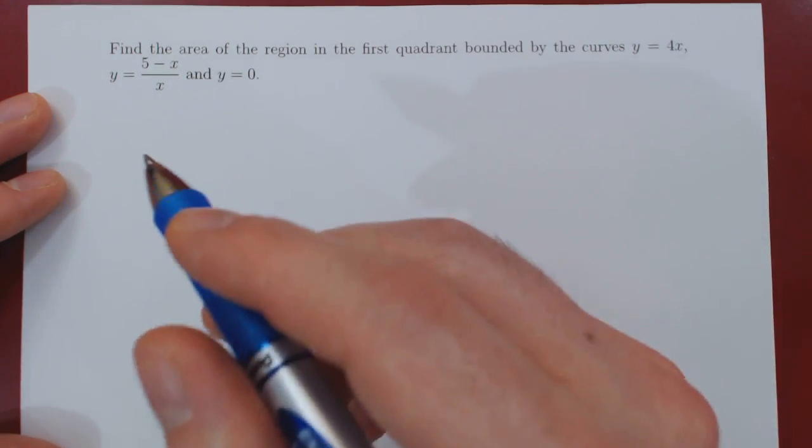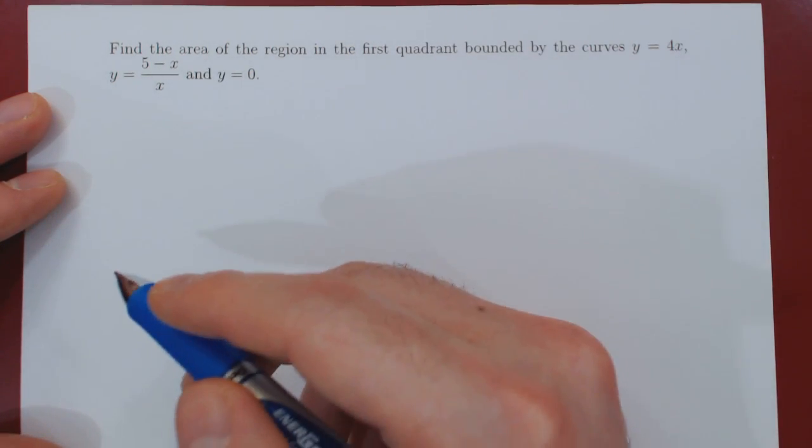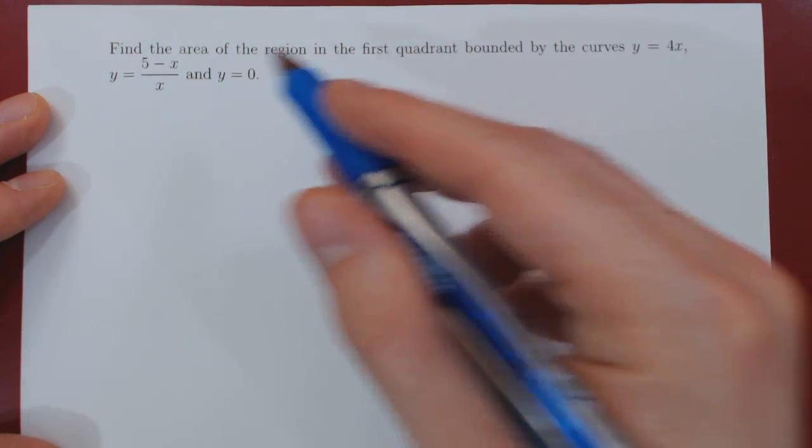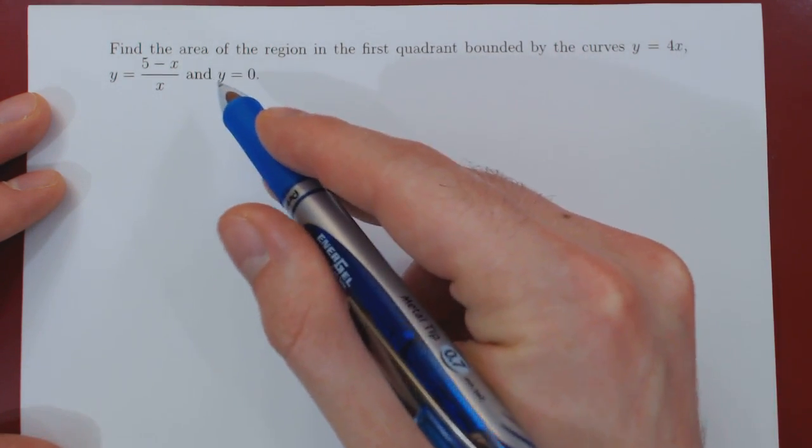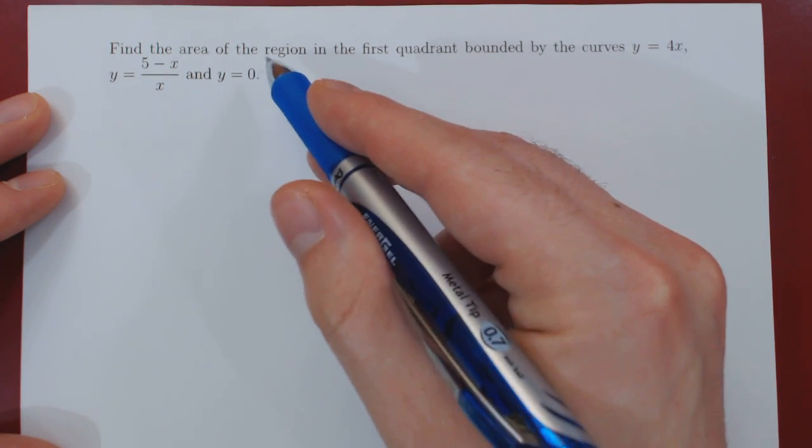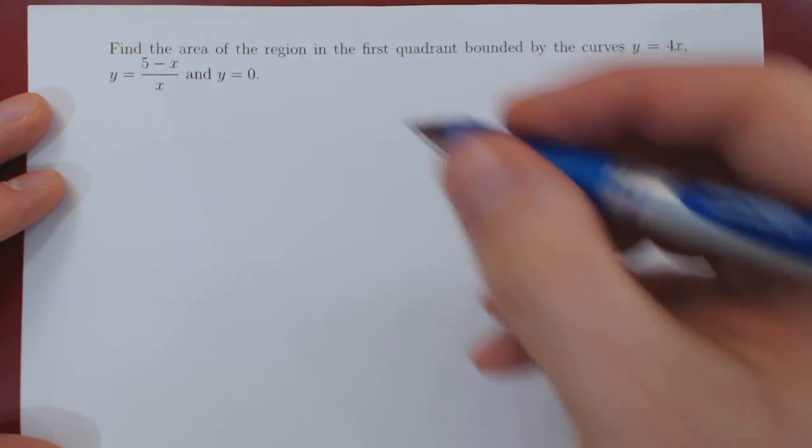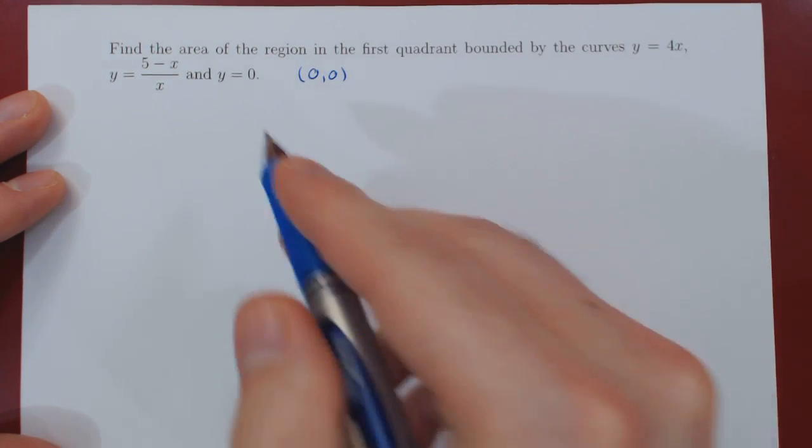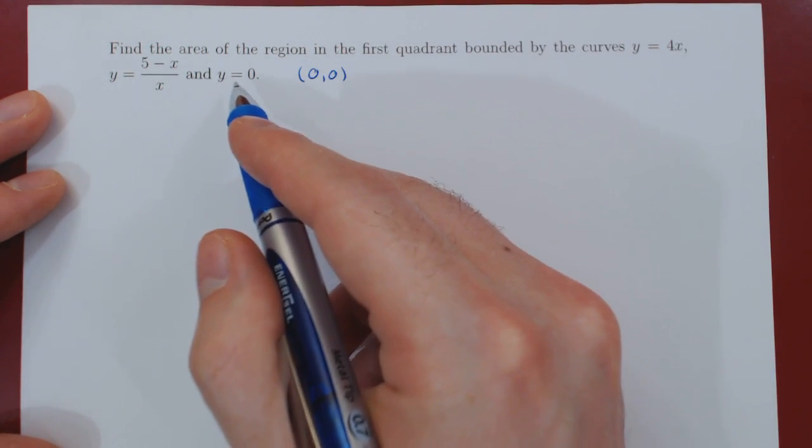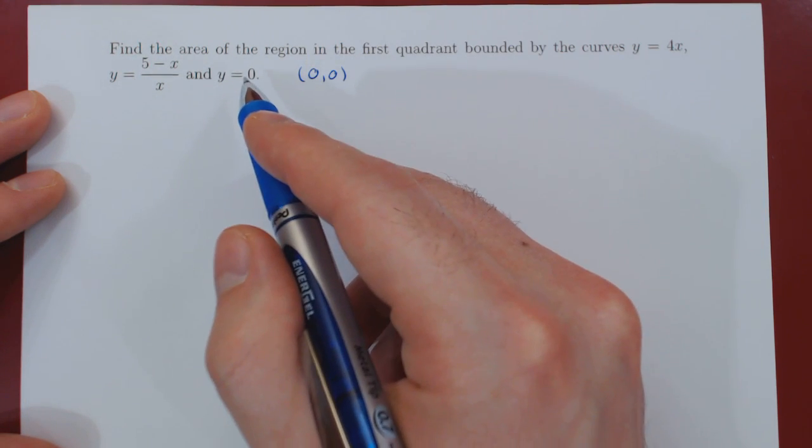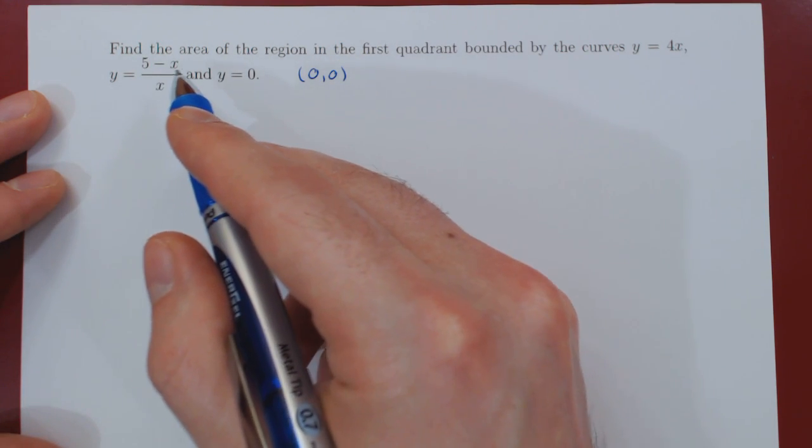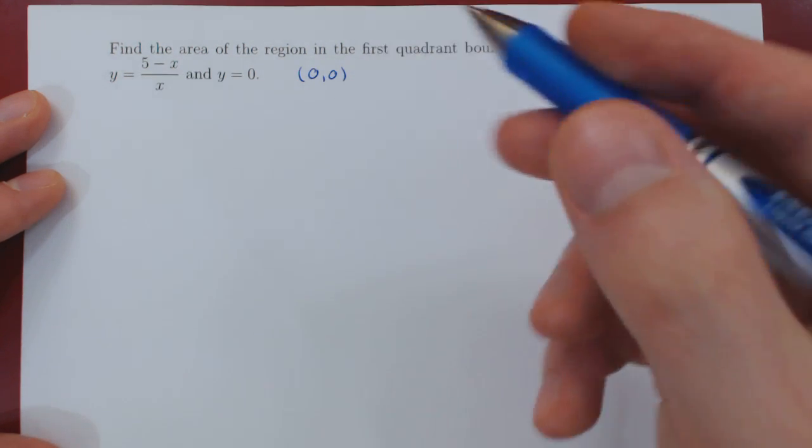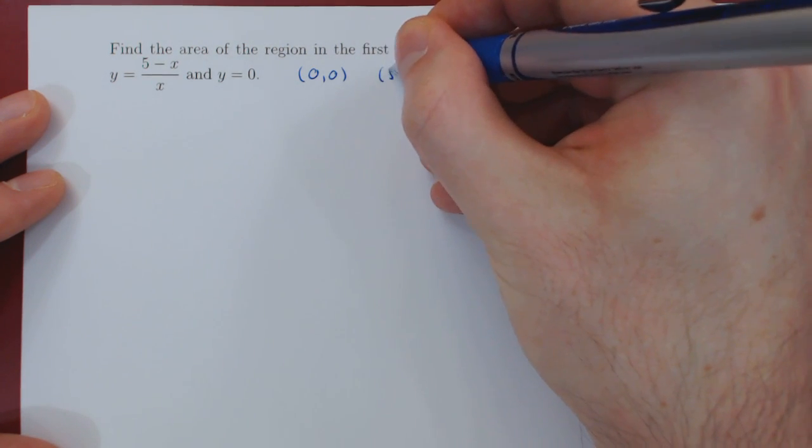Let us first find the points of intersection between these three curves. Let's first intersect the two more complicated curves with y equals 0. In the first case if y is 0, then clearly x must be 0, so we have the point (0,0), the origin. In the second case, if we intersect this one with this one, well y is 0 if the numerator is 0, which occurs if x is 5, so we have the point (5,0).